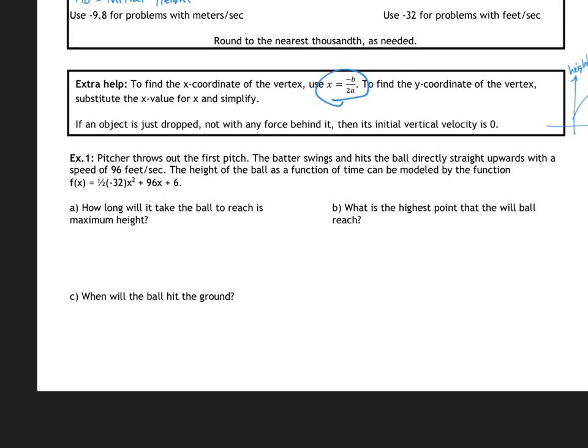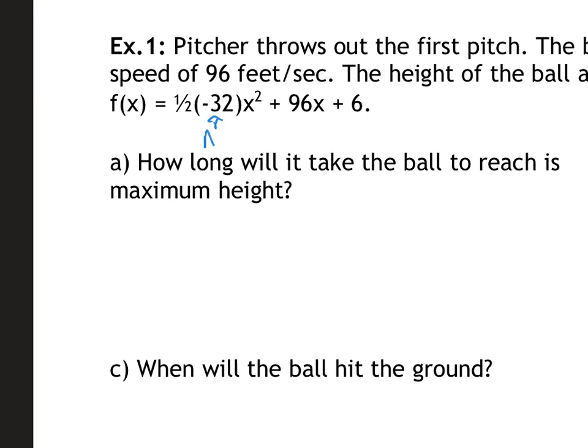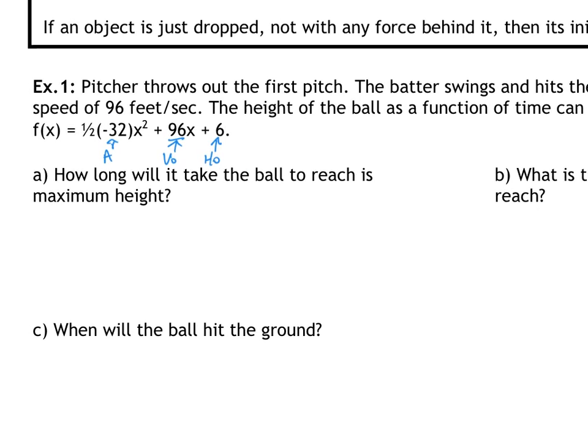A pitcher throws the first pitch, the batter swings and hits the ball directly straight upwards with a speed of 96 feet per second. The height of the ball as a function of time is modeled with the function below, which is already given. It's in feet per second, so that is your acceleration, that is your initial velocity, and that is your initial height. Multiplying out one-half gives us negative 16x squared plus 96x plus 6.